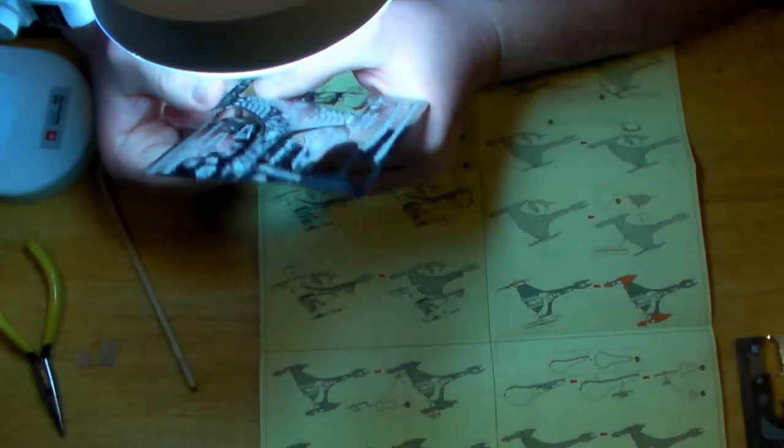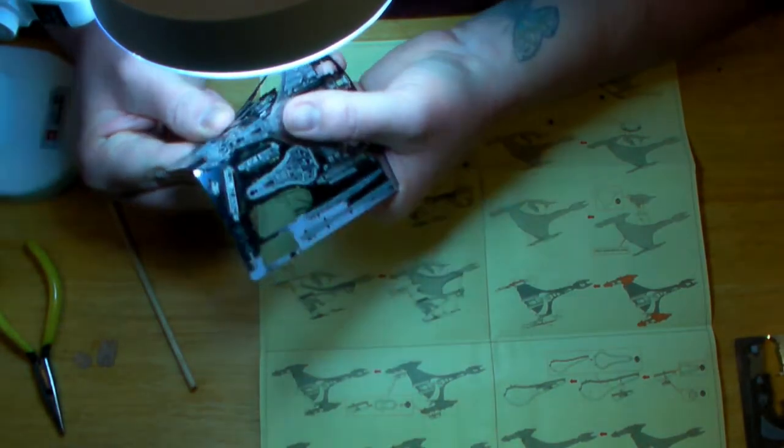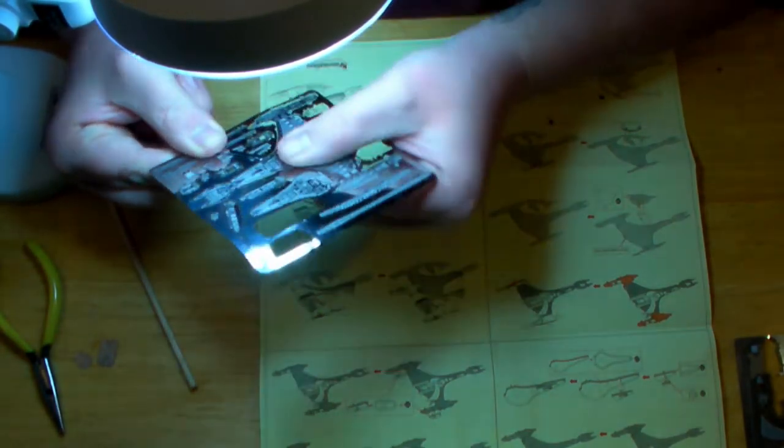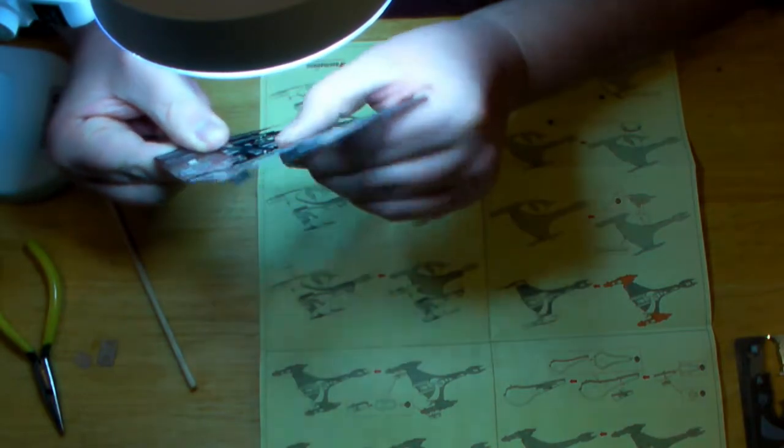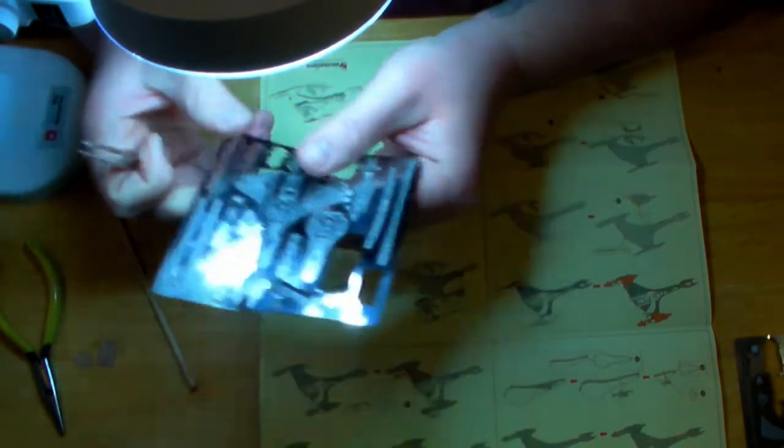Removing the parts from the little metal trees or sprues can be tricky. I used tweezers to help hold the parts flat and to keep them from bending or breaking in the wrong place.